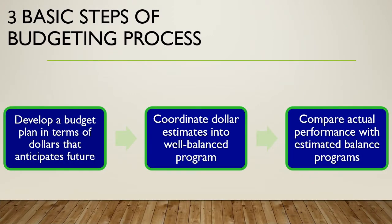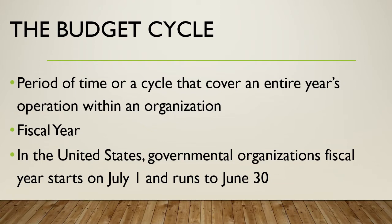We can look at the budget process in three basic steps. The first step is to develop a budget plan in terms of dollars that anticipates the future direction and needs of the organization. Then we coordinate dollar estimates into a well-balanced program or service listing. And then we compare actual performance with our estimated balance related to our programs, facilities, and things we've spent money on. Managers plan and budget for the future, so this should include things like inflation, a shift in emphasis or direction, effects of new programs or services, and any adjustment to revenues or expenses.